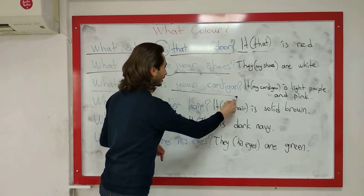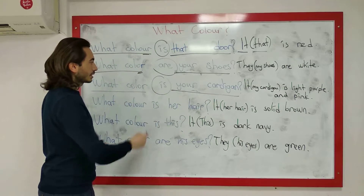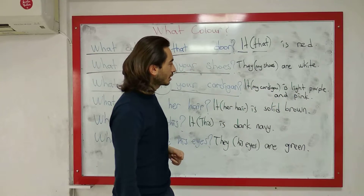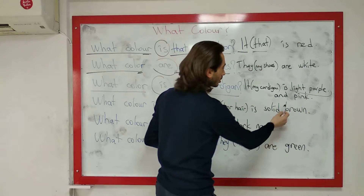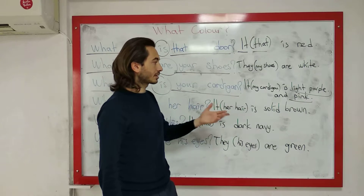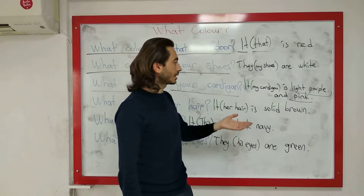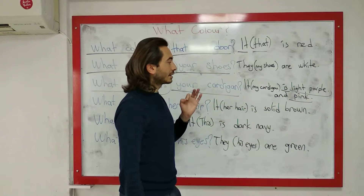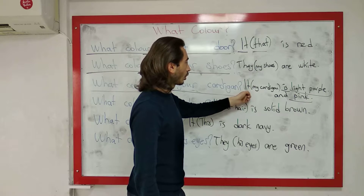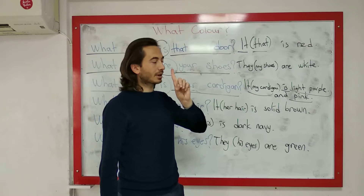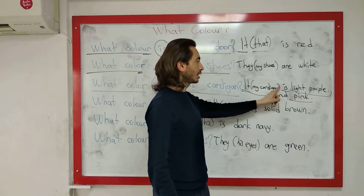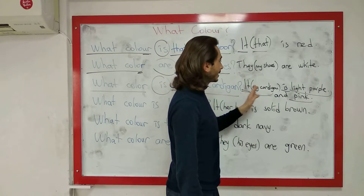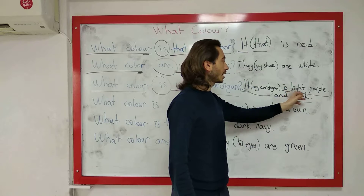What color is your cardigan? Senin hırkan ne renk? Hırka tekil olduğu için 'is' kullandım. Cevap: It is light purple and pink. Hırkanın iki rengi var — açık mor ve pembe. İki renk olduğu zaman ikisini de söyleyebiliriz. Ancak dikkat: iki renk var diye 'are' değil, özneyi dikkate aldığımız için 'is' yazıyoruz. My cardigan tekil, bir tane olduğu için 'it is' veya 'my cardigan is light purple and pink.'